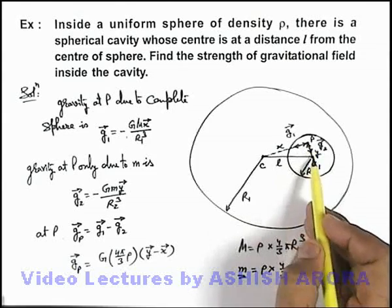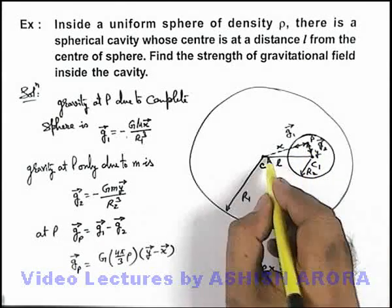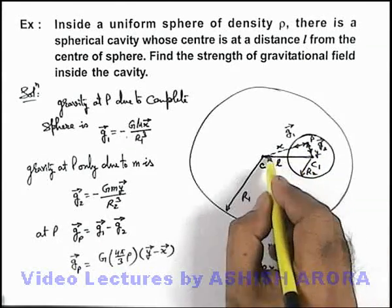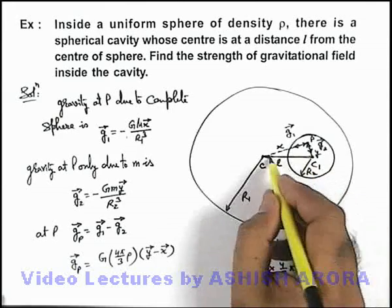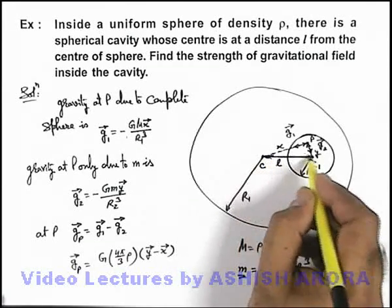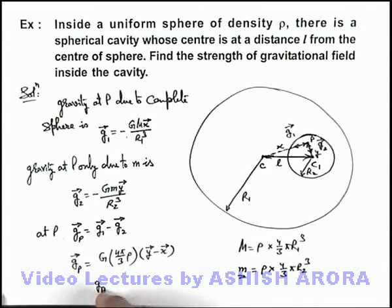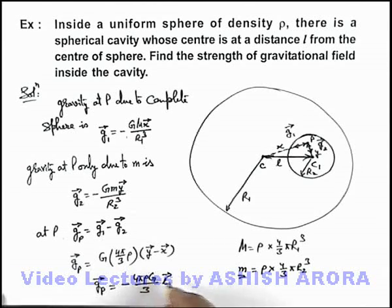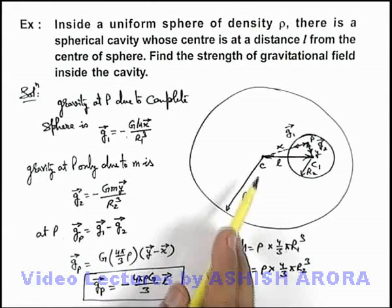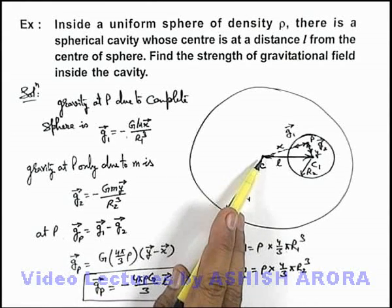And for this point P, y vector minus x vector can be written as this l vector, or negative of l vector if l vector is towards the center of gravity. So this gₚ vector can be written as -4πρG/3 · l vector, where l vector is the vector directed towards the center of cavity with respect to the center of sphere.